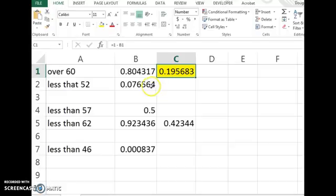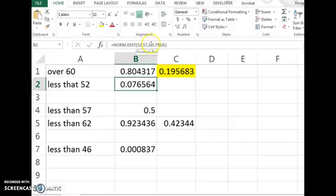And then for less than 52, it's just the one-stepper. We're going to type in normal distribution, 52. And then the mean is 57. Standard deviation's 3.5. We use true. And you get less than 52.